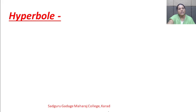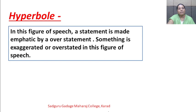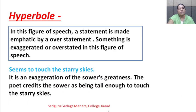The next poetic device is hyperbole. In this figure of speech, a statement is made emphatic by an overstatement — something is exaggerated or overstated. Example of hyperbole: 'Seems to touch the starry skies' — it is an exaggeration of the sower's greatness. The poet credits the sower as being tall enough to touch the starry skies.